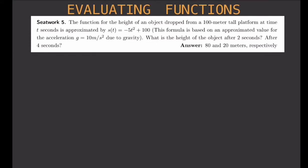The function for the height of an object dropped from a 100-meter tall platform at time t seconds is approximated by s(t) equals negative 5t squared plus 100. What is the height of the object after 2 seconds? After 4 seconds.